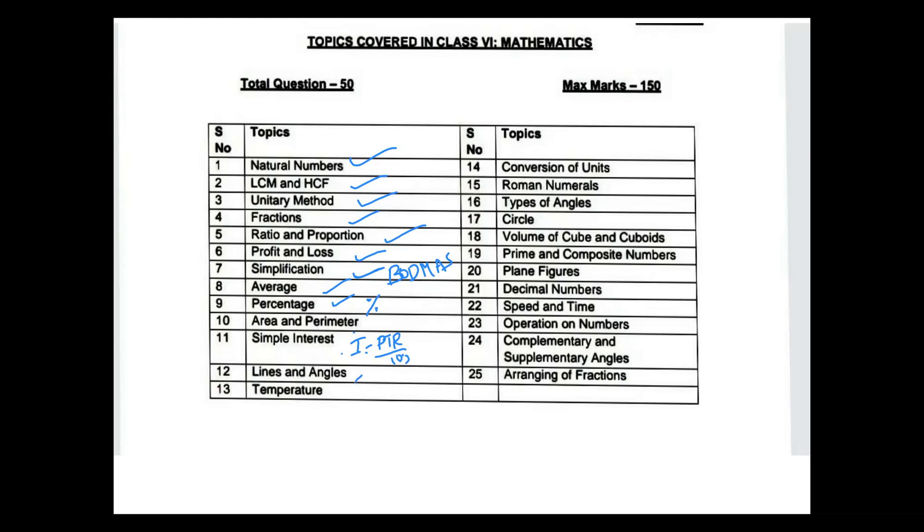Lines and angles, also very important. Temperature conversion - Fahrenheit to Celsius, Celsius to Fahrenheit. Conversion of units - you will get weight, length, capacity, and time. All will come in the conversion of units.